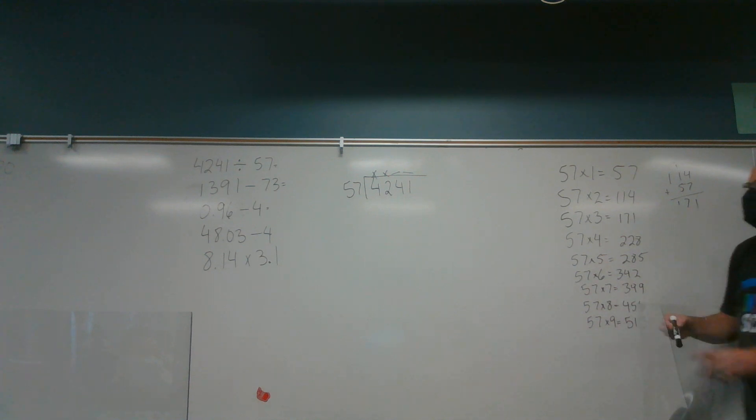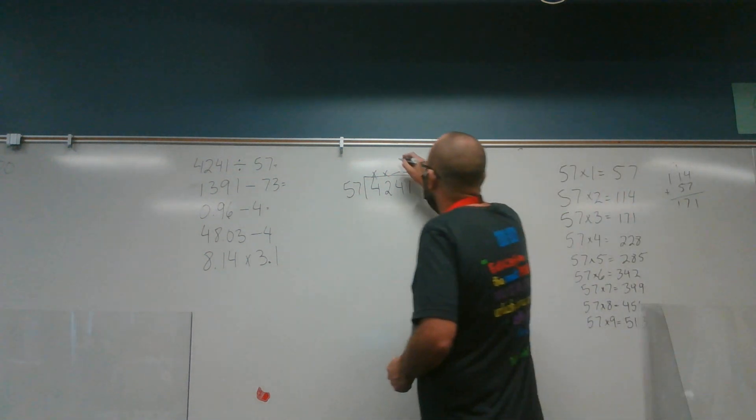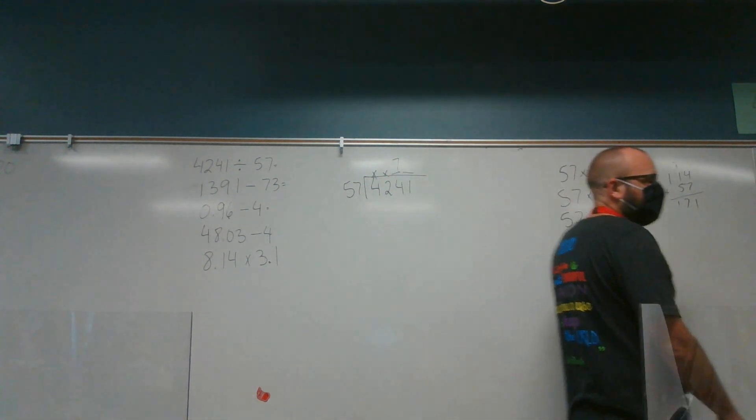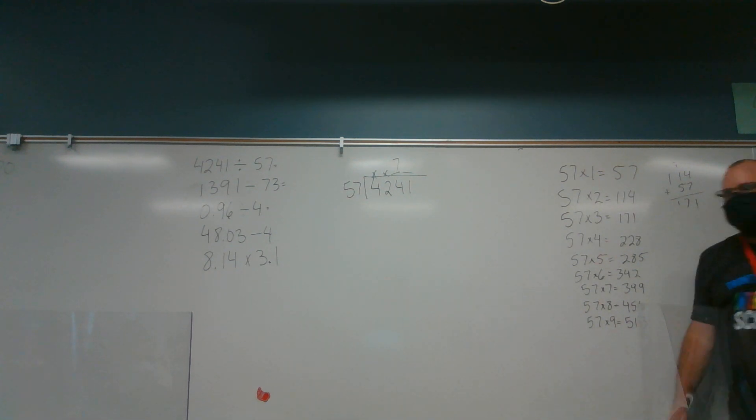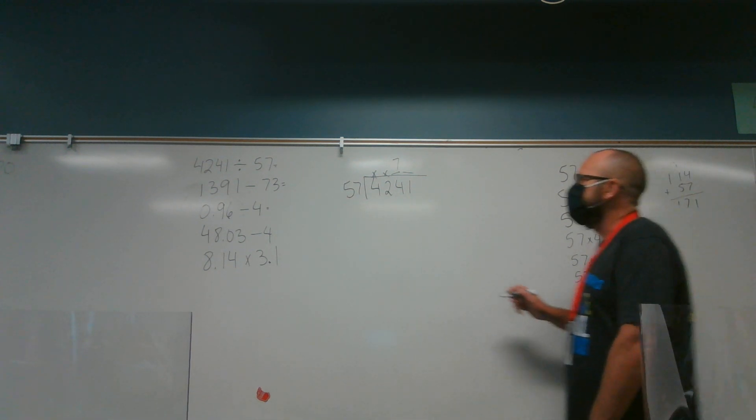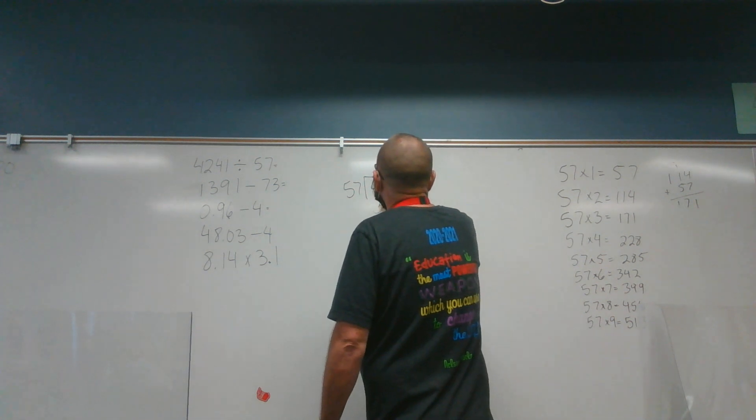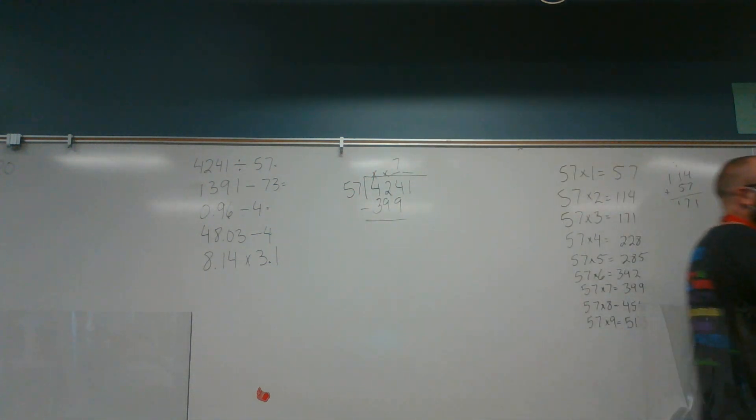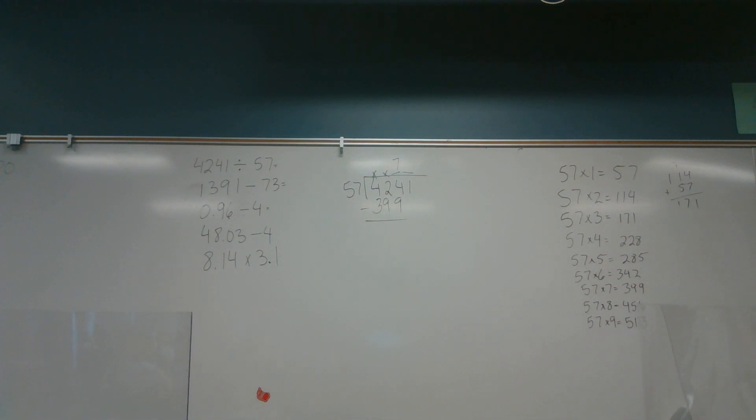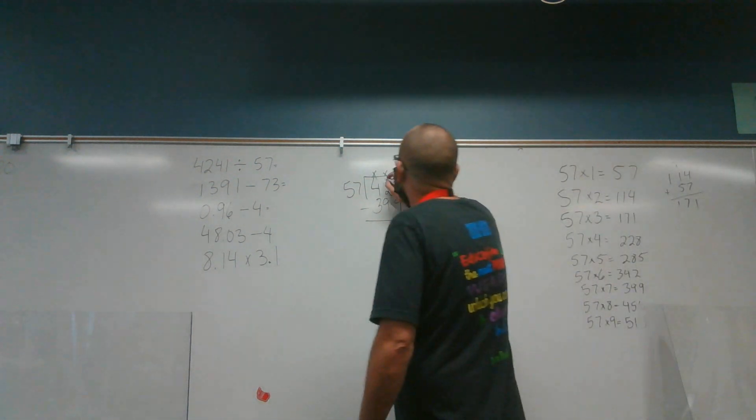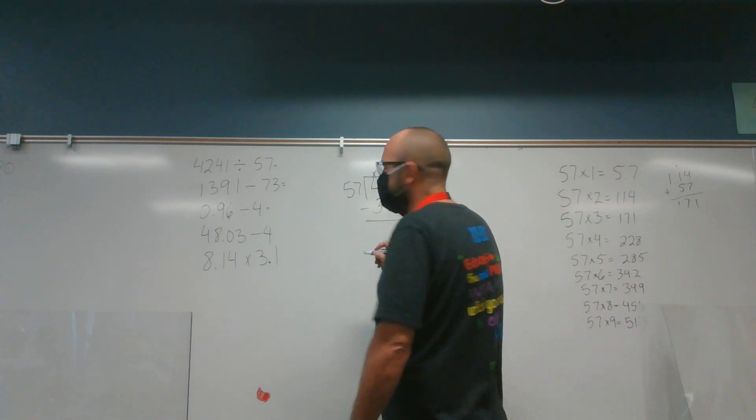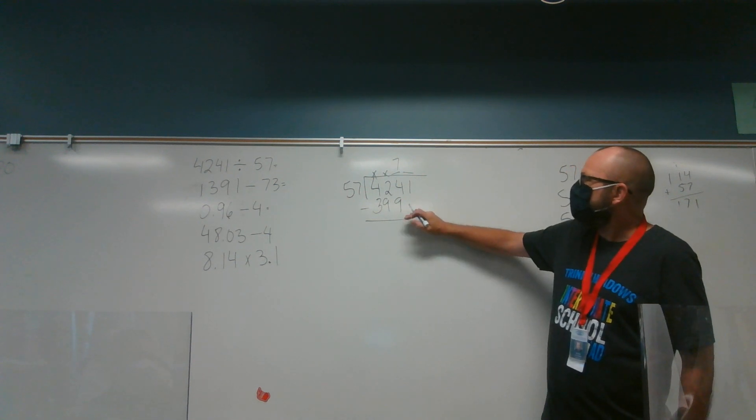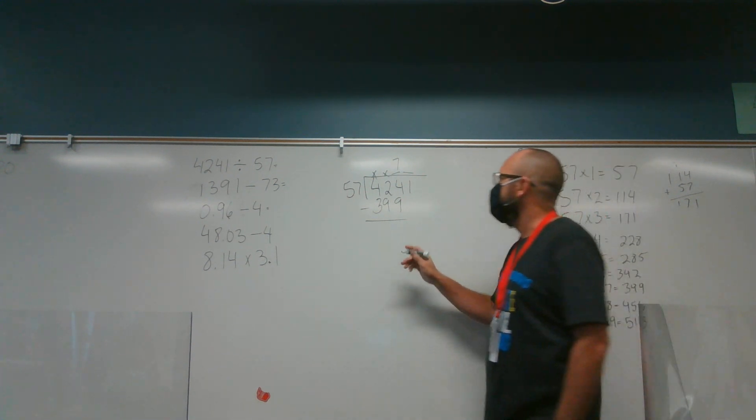So 57 times 7. My multiple goes on the top, or my, sorry, what I'm multiplying goes on the top. And 57 times 7 is 399. And just remember because you can only put one number at the top at a time. Then I need to find the difference of these two numbers. So I got to subtract. It looks like it's 25. 251.